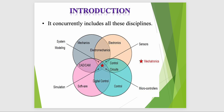By the help of this slide, it is very easy to understand what mechatronics is. First, we merge two branches — mechanics and electronics — and we get electromechanics. When we merge electronics with control, we get a control circuit. When we merge control with software, we get digital control. When we merge software with mechanics, we get CAD and CAM. When we merge all of these together, we get mechatronics.